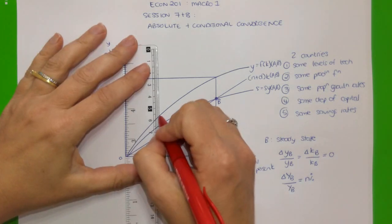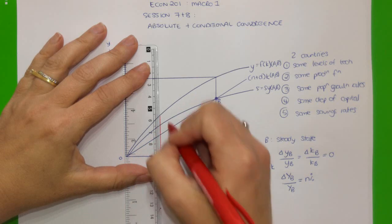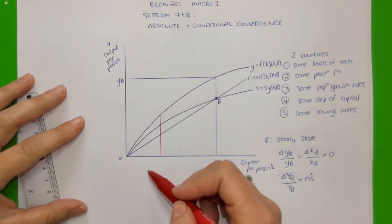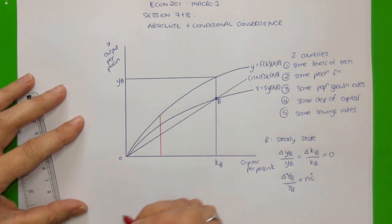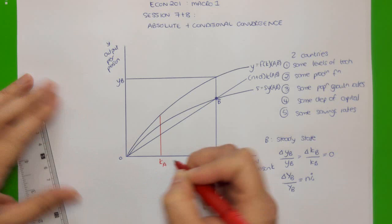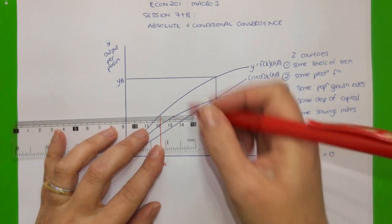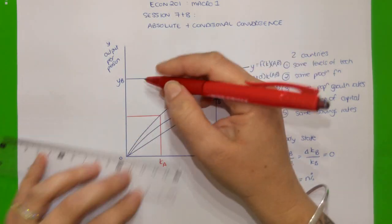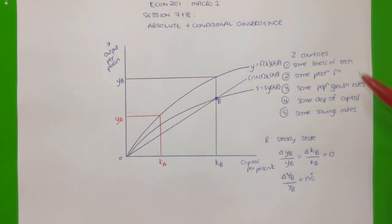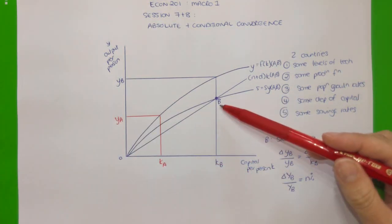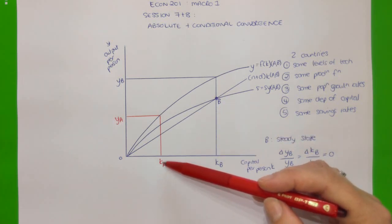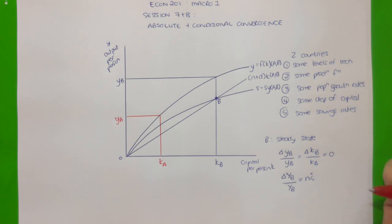What we're now going to look at is what would happen if there was another country, country A, which — although they had the same production function, the same investment requirement line, and the same savings function — started off at some level of capital stock per person which was lower than the steady state level. So country A would have a lower capital per person and a lower output per person than country B when they started off.